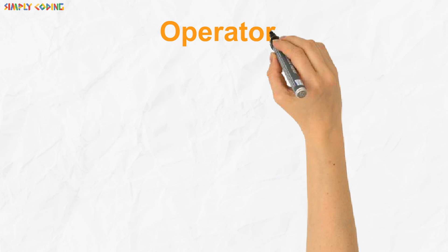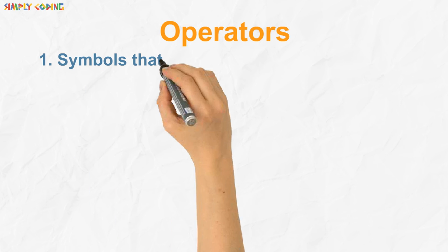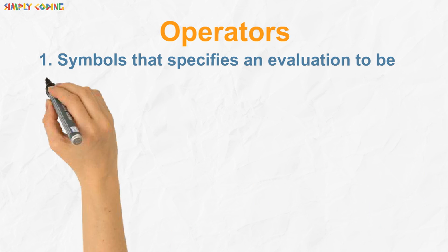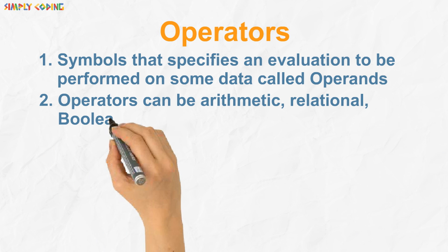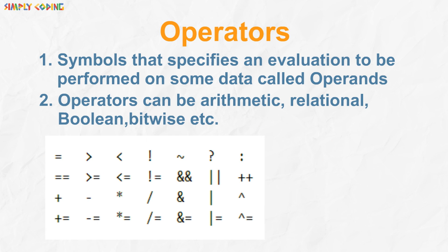Last of the tokens are operators. They are symbols that specifies an evaluation to be performed on some data called operands. The operator can be arithmetic, relational, boolean, bitwise, etc. In our following video, we will learn more about operators in detail.